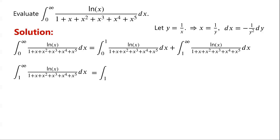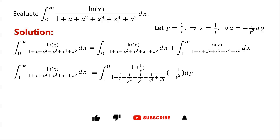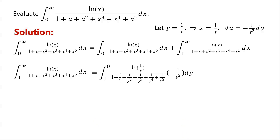So we can now write the integral from 1 to infinity as the integral from 1 to 0 of ln(1/y) over 1 plus 1/y plus 1/y² plus 1/y³ plus 1/y⁴ plus 1/y⁵, times negative 1 over y squared, dy.